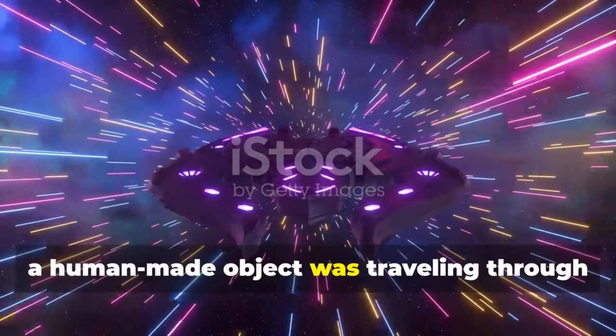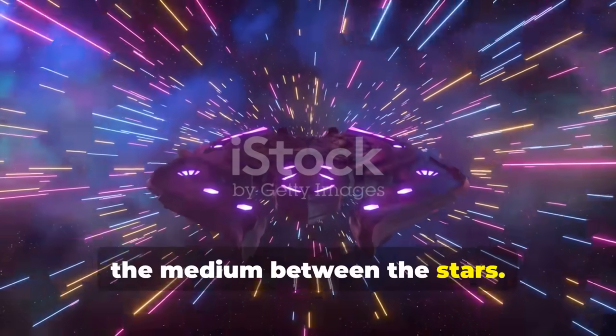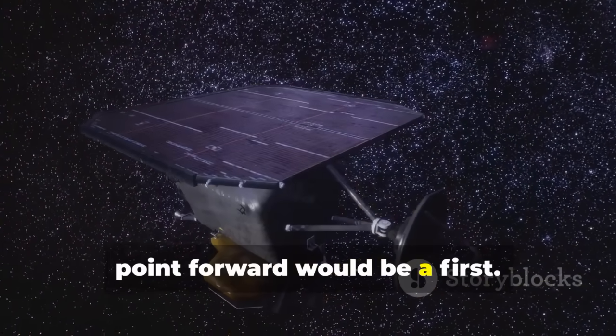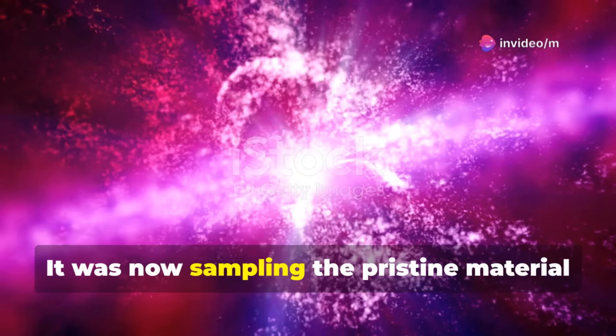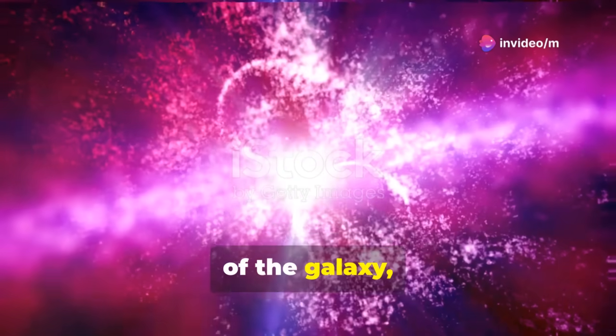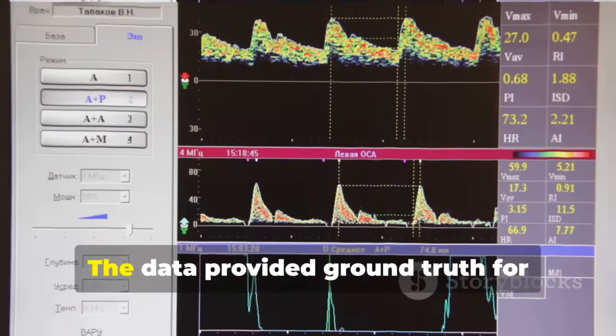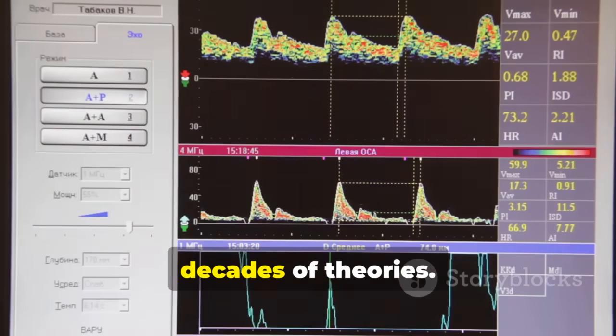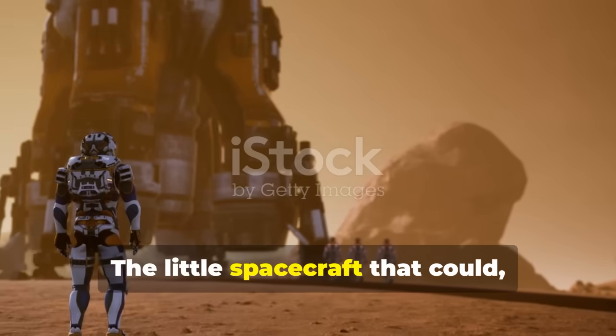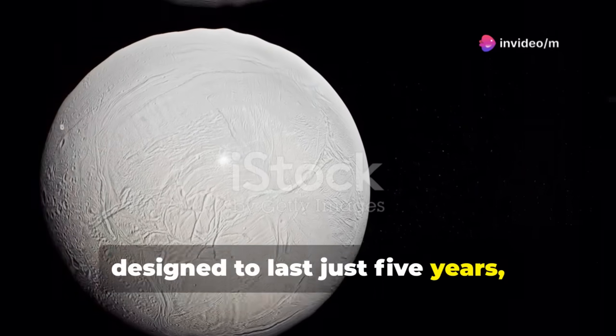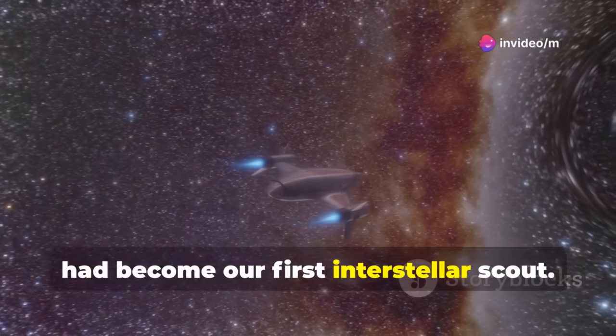Everything Voyager 1 measured from this point forward would be a first. It was now sampling the pristine material of the galaxy, the stuff from which stars and planets are born. The data provided ground truth for decades of theories. The little spacecraft that could, designed to last just five years, had become our first interstellar scout. We had finally crossed our cosmic shoreline.